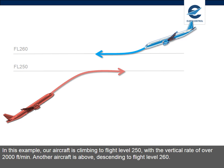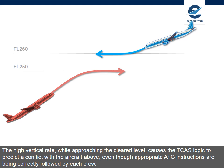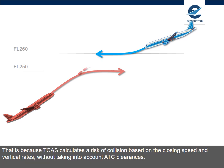In this example, our aircraft is climbing to flight level 250 with a vertical rate of over 2,000 feet per minute. Another aircraft is above, descending to flight level 260. The high vertical rate while approaching the cleared level causes the TCAS logic to predict a conflict with the aircraft above, even though appropriate ATC instructions are being correctly followed by each crew. That is because TCAS calculates a risk of collision based on the closing speed and vertical rates, without taking into account ATC clearances.